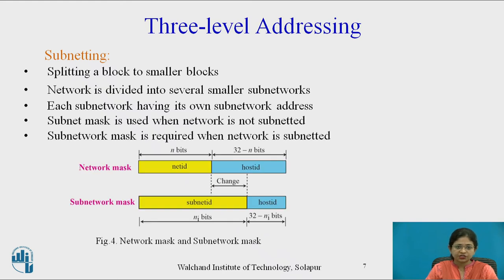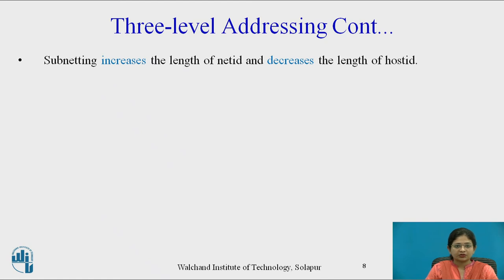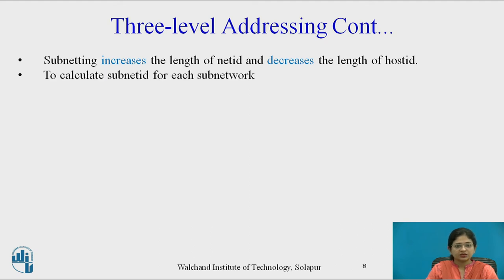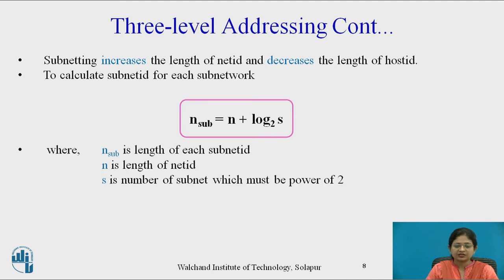Here is a diagram showing network mask as well as subnetwork mask. In network mask, net ID and host ID are present, represented by n bits and 32-minus-n bits respectively. In subnetworking, there is a splitting of blocks, so host IDs decrease. The subnet ID is represented by n_i bits, whereas host ID is represented by 32-minus-n_i bits. From this diagram, we conclude that subnetting increases the length of net ID and decreases the length of host ID. To calculate the subnet ID length for each subnetwork, the formula is: n_sub equal to n plus log(s) base 2, where n_sub is the length of each subnet ID, n is the length of net ID, and s is the number of subnets, which must be a power of 2.